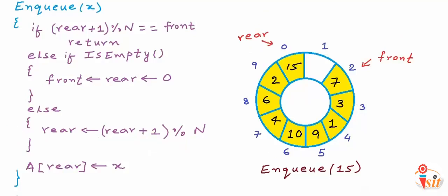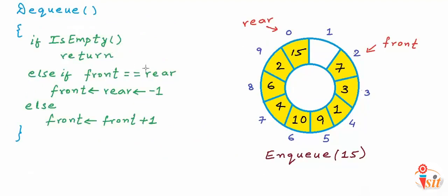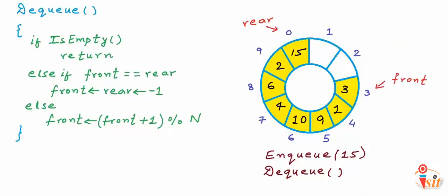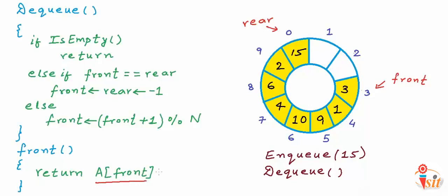For the dequeue function, the first two conditions remain the same. In the final else, when incrementing front, we do it circularly: front = (front + 1) % n. In the simulation, front is 2, so (2 + 1) % 10 = 3 — one more cell becomes available. For the front operation, we simply return the element at front index, first checking that the queue is not empty — returning A[front] only when front is not -1.